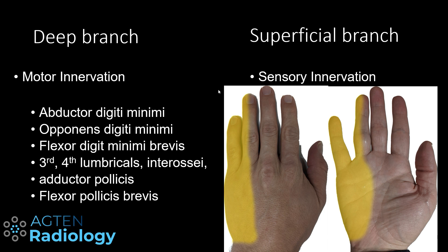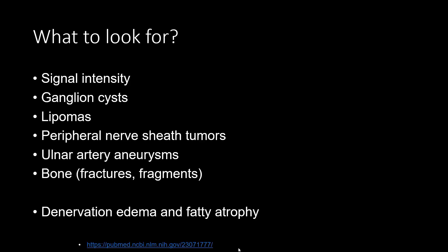The superficial branch is a sensory nerve covering the skin at this level, with some variation depending on which illustration you consult. When we know the anatomy, we need to know what to look for in terms of pathology. The two most important things to assess are signal intensity of the nerve itself and any mass compressing on the nerve — most commonly ganglion cysts, but also peripheral nerve sheath tumors, aneurysms of the ulnar artery, or fracture fragments. If there is nerve damage, you also have to check for denervation edema and fatty atrophy of the corresponding muscles.